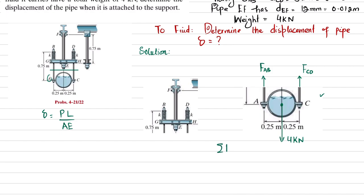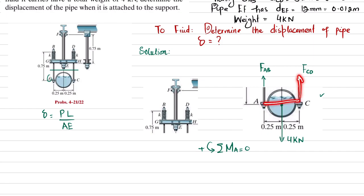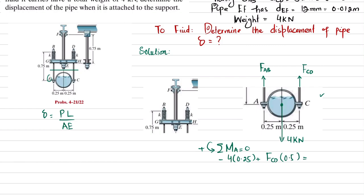The first equilibrium condition: sum of all moments about point A equals zero, taking counterclockwise as positive. About point A, the moment of 4 kN at a perpendicular distance of 0.25 m is clockwise (negative), and F_CD at a perpendicular distance of 0.5 m is counterclockwise (positive). So: −4 × 0.25 + F_CD × 0.5 = 0, giving F_CD = 2 kilo-newton.